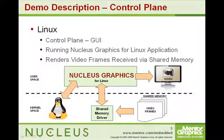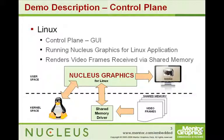On the control plane side of this AMP system, we're running Linux in a typical control plane application — in this case controlling the GUI. We're using Nucleus Graphics for Linux to create a menuing system. We have a very nice UI designer that allows us to take various menu options and graphical components and tie them together into a very nice menuing system. In this case, we've created a menu system similar to what you might see in a media player.